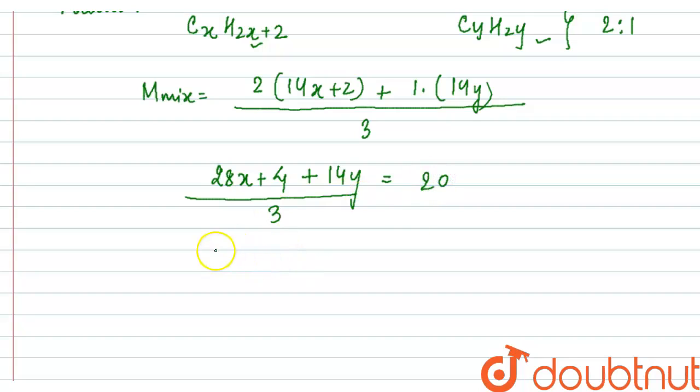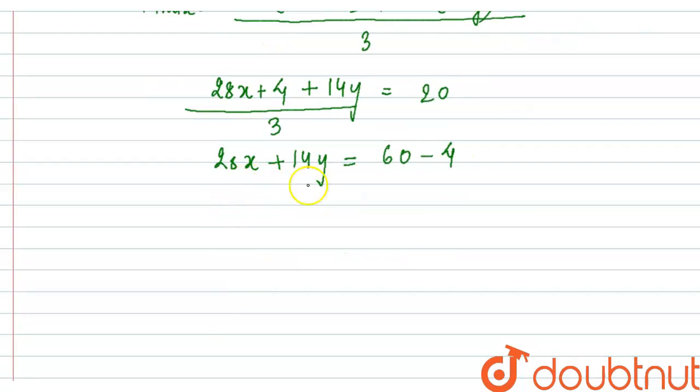So 28x + 14y equals 60 minus 4, because this 4 will go to this side. This will give us a total of 28x + 14y = 56. Now let us assume this as equation 1.